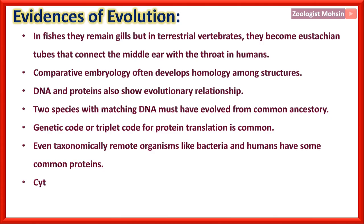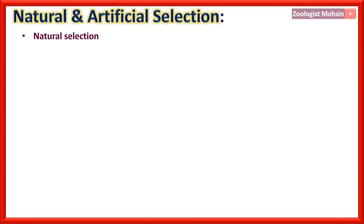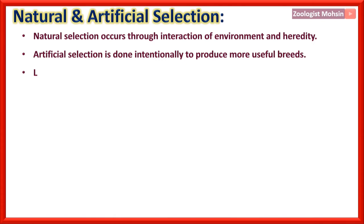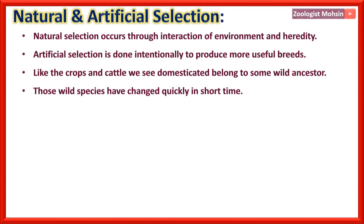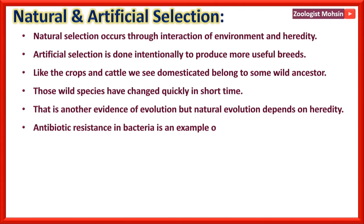Cytochrome C is a respiratory protein found in all aerobic species. Natural selection occurs through interaction of environment and heredity, while artificial selection is done intentionally to produce more useful breeds. The crops and cattle we see today are descended from wild ancestors that changed quickly in short time due to artificial selection. Natural evolution depends on heredity and took a huge time. Antibiotic resistance in bacteria is an example of live natural selection.